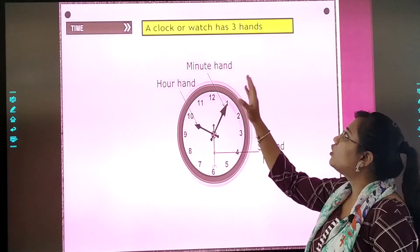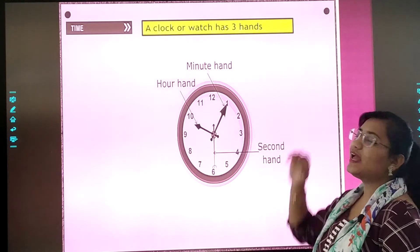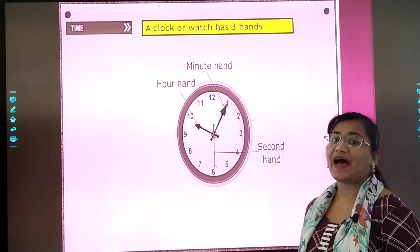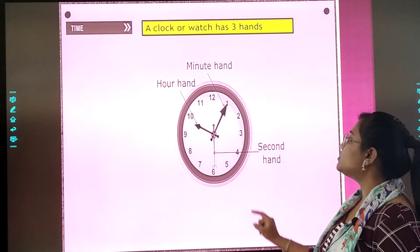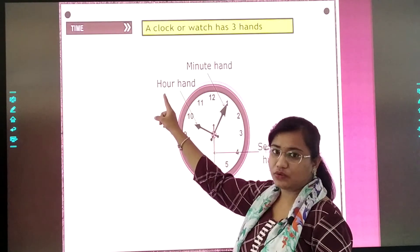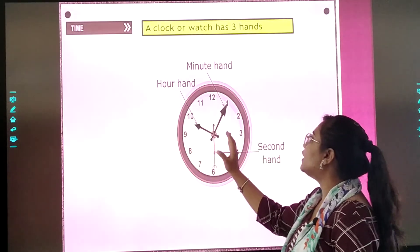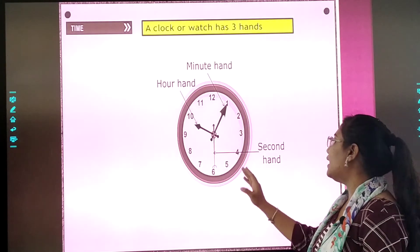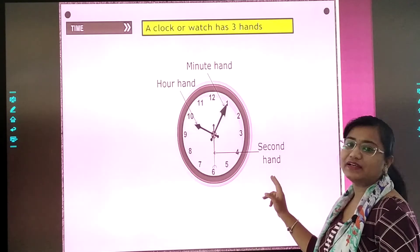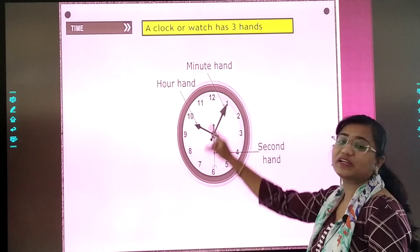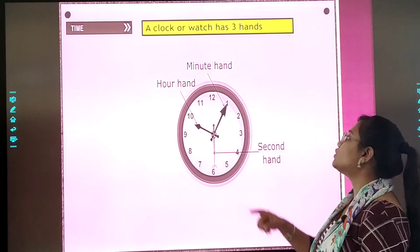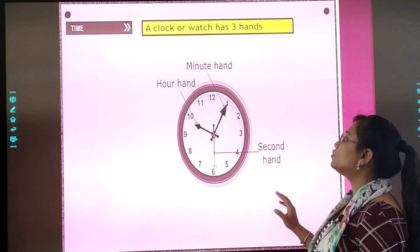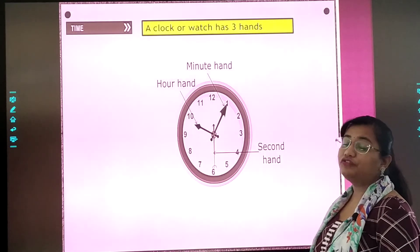A clock or a watch has three hands. Each and every clock or each and every watch, they have three hands. The first one is the hour hand. Okay? The small hand. Then the minute hand means the big hand. Okay? And then comes the second hand. Second hand jo hamesha move karta reta hai. Jaldi jaldi move karta hai. It is also known as the thin hand. Okay, dear children. So these are the three hands of a clock.